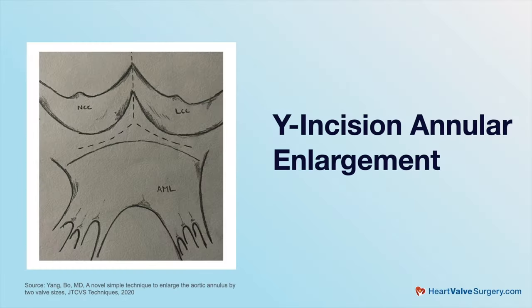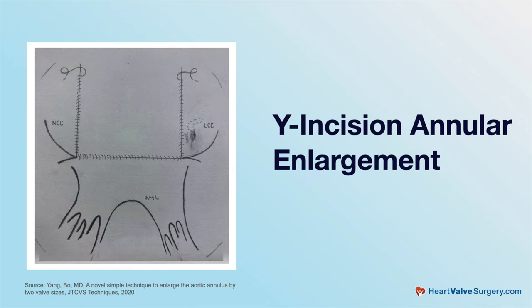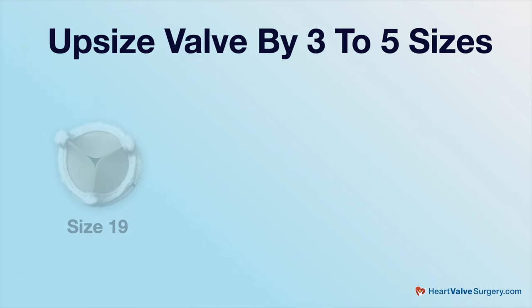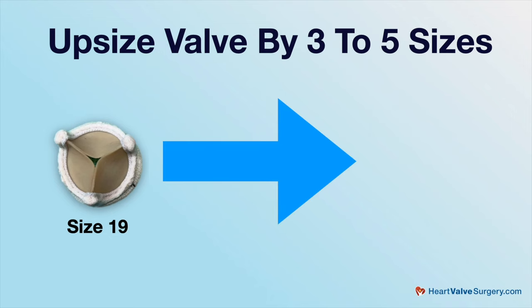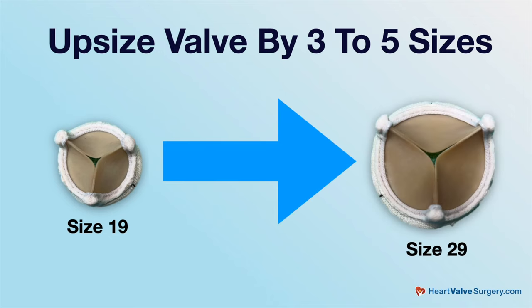So patients might be wondering: what is the procedure and why did you create it? The procedure is called the Y-incision annular enlargement. Basically, we incise the aortic annulus in an inverted Y fashion, and we enlarge the annulus. We can upsize the valve by three to five valve sizes, and at the same time enlarge the root.